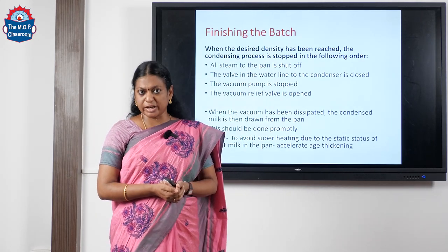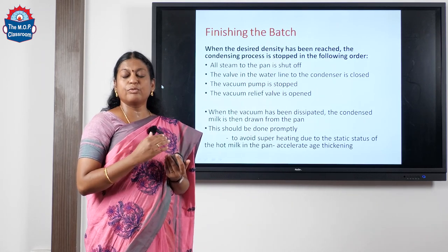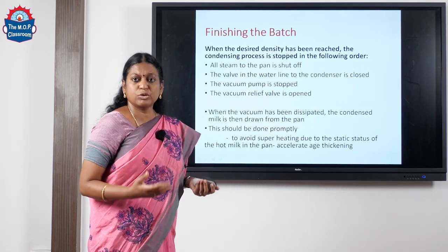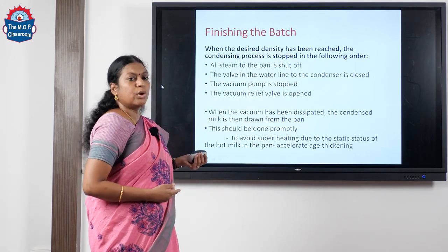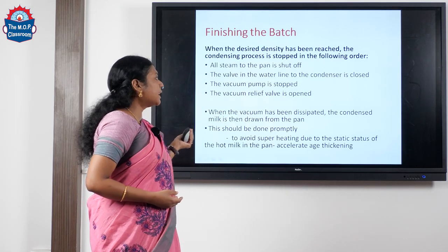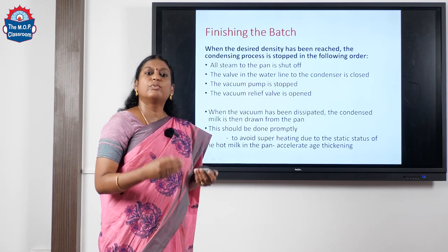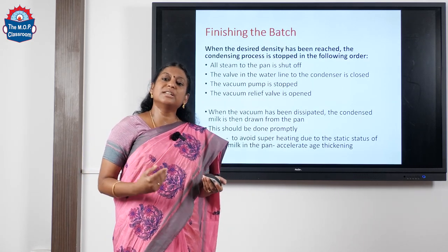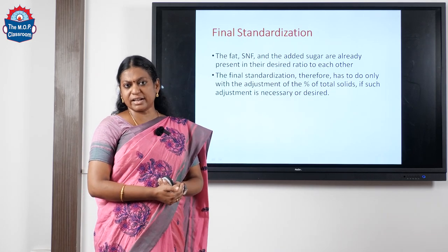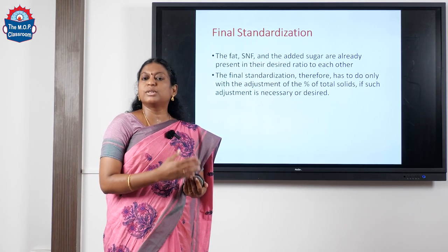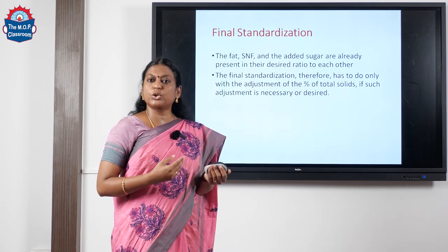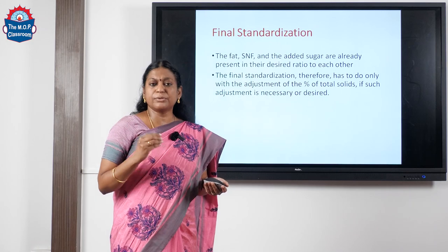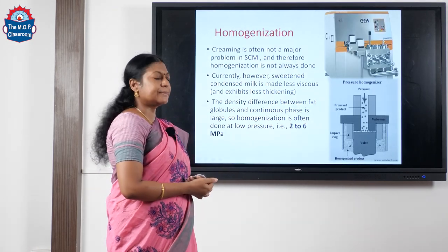When the desired density is reached, we need to finish the batch — meaning we stop the process of condensation. The steps are: cut off the steam to the pan, close the valve in the water line, stop the vacuum pump, and open the vacuum relief valve. Once the vacuum is dissipated, draw the sample from the condensing pan promptly, because if we delay, the milk can get overheated. Then go for final standardization — check for total solids and adjust if there is any difference from legal standards.